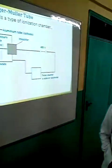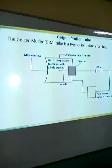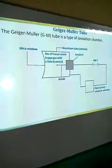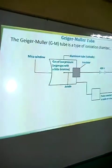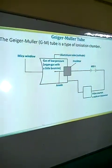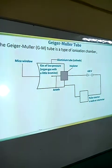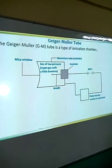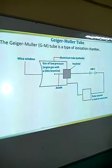We are studying methods or different types of detectors. We have already studied the diffusion cloud chamber. Now we want to look at the next one, which is the Geiger-Müller tube, normally shortened as GM tube. The GM tube also uses the ionization method to identify or detect radiation, and projected here is the diagram of the GM tube.